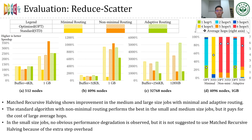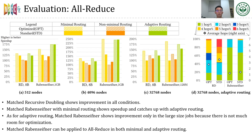Here is the result for all-reduce. Our optimization shows improvement in minimal and adaptive routing, but the improvement is small because there is not much room for optimization. The right figure shows that standard algorithms already achieve low average hops, but our optimization still improves it.